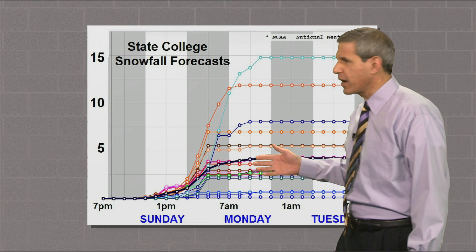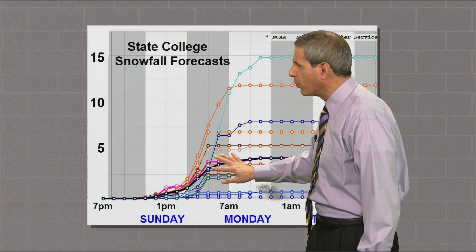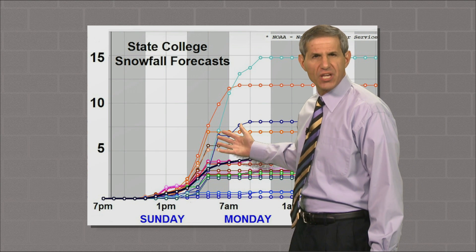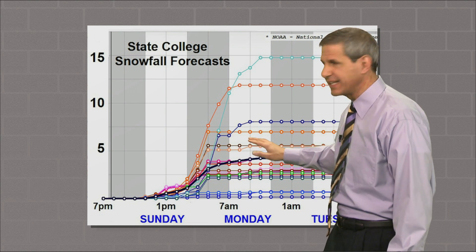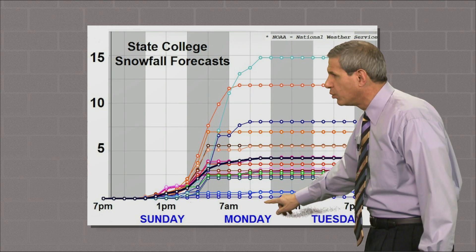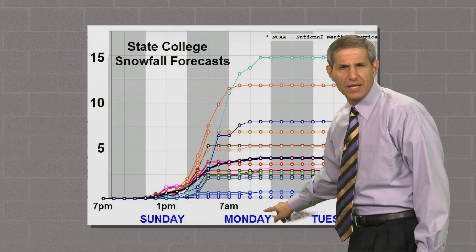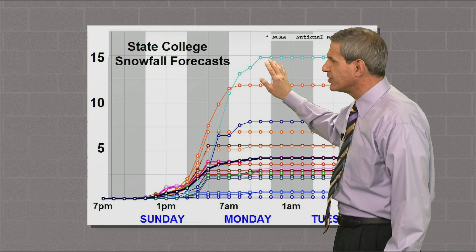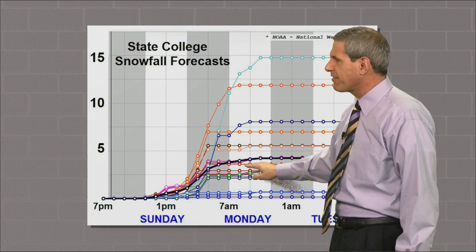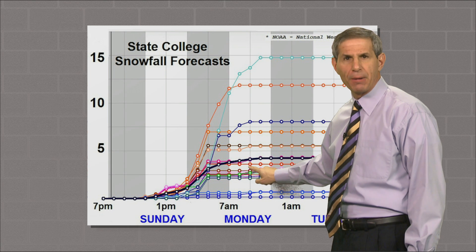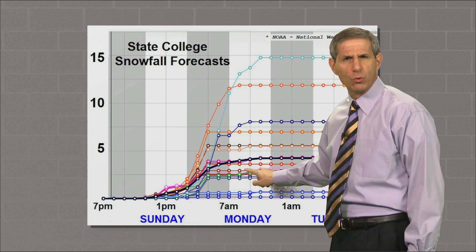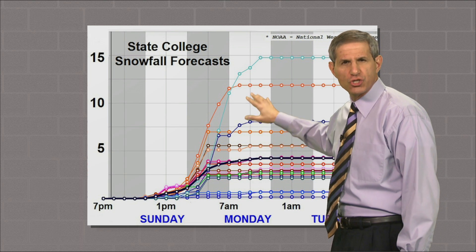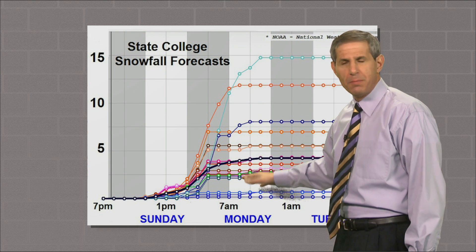Where they slope upward, the model was forecasting snow. In this set of model runs, the least snow was well under an inch, the most was 15 inches, and the average — the thick black line — was around 4.